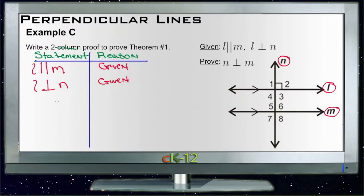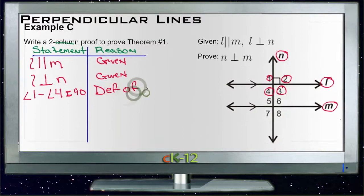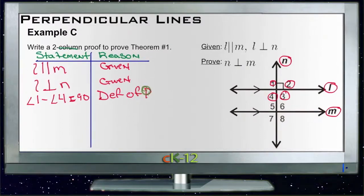And we know that angles 1, 2, 3, and 4, right here 1, 2, 3, and 4, are all right angles. Angles 1 through 4 equal 90 degrees because they're perpendicular lines L and N. So based on the definition of a perpendicular line, we know those are 90 degrees. Definition of perpendicular.